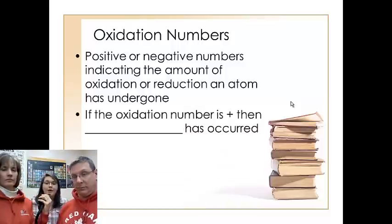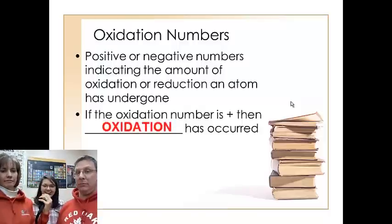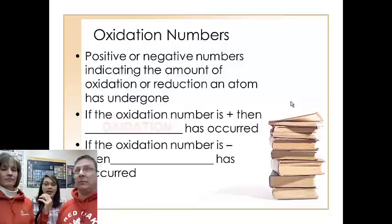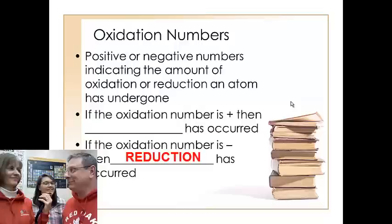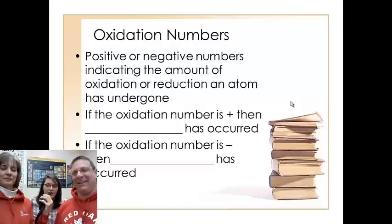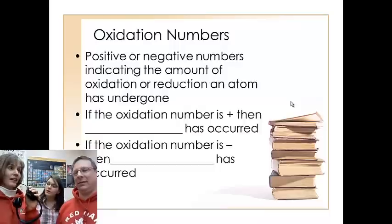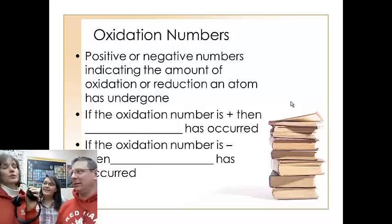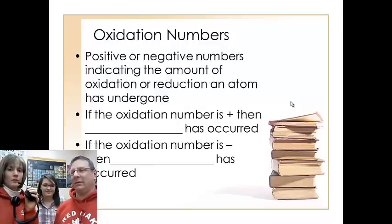So if an oxidation number is positive that means that it has lost electrons and that oxidation has occurred. On the other side, if the oxidation number is negative then it had to gain those electrons, meaning reduction has occurred. Again think back to oil rig. Oxidation is the loss of electrons so you get something that's positive. And reduction is gain so you're getting something that's negative. And again for the bazillionth time electrons are negative which is why reduction is gain actually makes perfect sense.